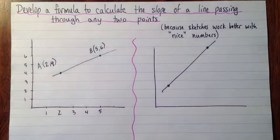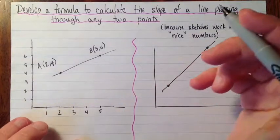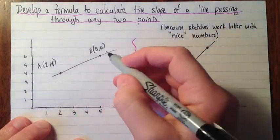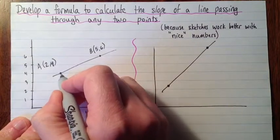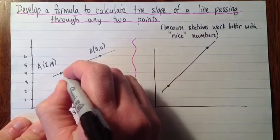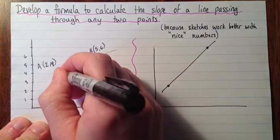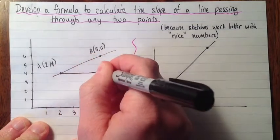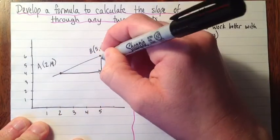Okay. So we know that the slope is rise over run. So if we're going from A to B, let's look at what the rise and the run would be. Okay, so we go over and we go up.